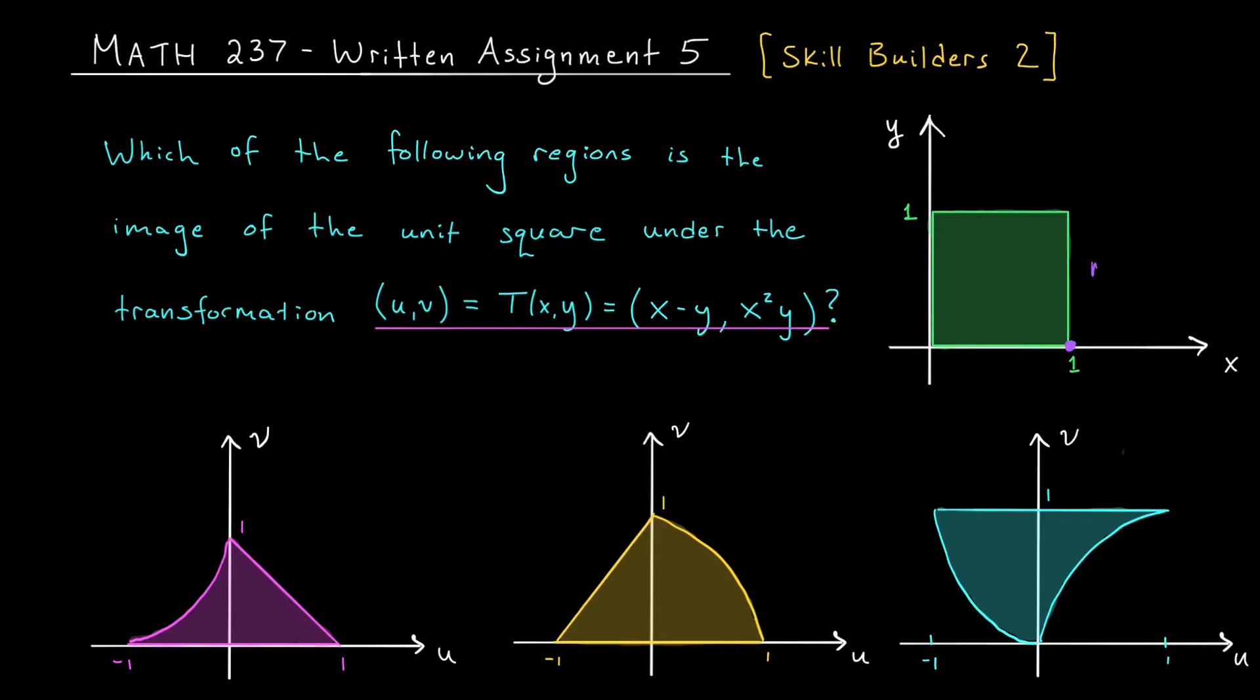If we had no idea how to approach this problem, one thing that we could try is to map individual points from the unit square into the uv plane. For example, the point (1, 0) would map to T(1, 0), which is (1, 0). It actually didn't move at all. So the point (1, 0) must be in our image. You can see that this small piece of information is actually enough to rule out option c. (1, 0) is not in this region. In general, though, mapping individual points can take a long time. So instead, we often focus on individual boundary components of our region.